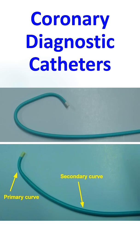The most popular catheter for the femoral route is the Judkins catheter. Judkins catheters come in left coronary and right coronary curves, and have a primary curve and a secondary curve. The primary curve engages the coronary ostium while the secondary curve stabilizes the catheter along the opposite wall of the aorta. Larger secondary curves are needed when the ascending aorta is dilated.